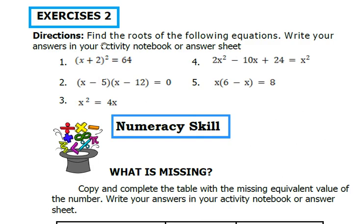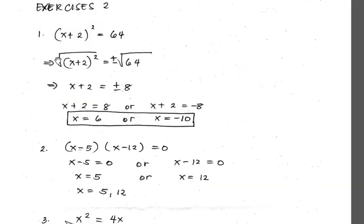In exercise 2, we are asked to find the roots of the given equations. Number 1: quantity x plus 2 squared equals 64. Extracting the square root of both sides: x plus 2 equals plus or minus 8. Equating x plus 2 to positive 8 gives x equals 6; equating to negative 8 gives x equals negative 10. The solutions are x equals negative 10 and x equals 6.